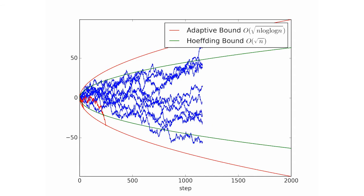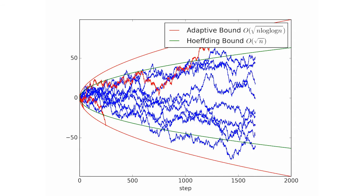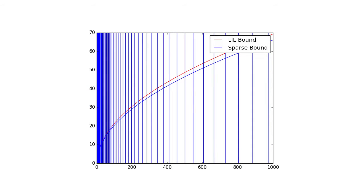We also analyze batch sampling schemes where we sample a batch of samples at each time step. Alternatively, this means that the bound is only evaluated at certain predetermined time steps.